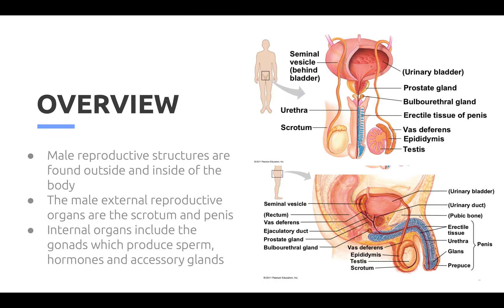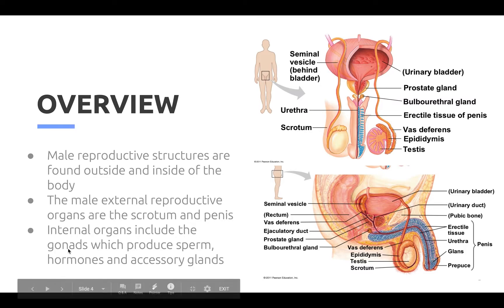Most of the male reproductive system is located outside of the body, such as the scrotum, penis, epididymis, and testes. Internal organs called accessory organs include the vas deferens, seminal vesicles, prostate gland, and bulbourethral glands. It also includes gonads which produce sperm, hormones, and accessory glands.